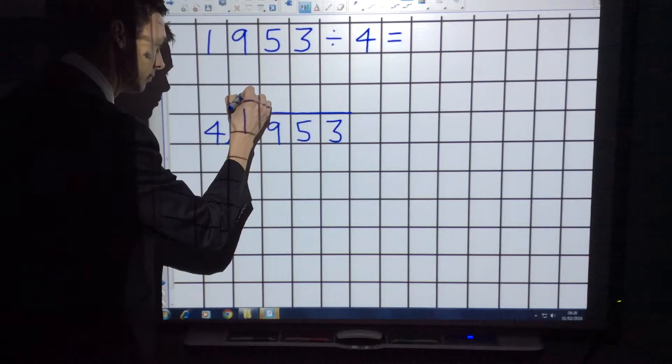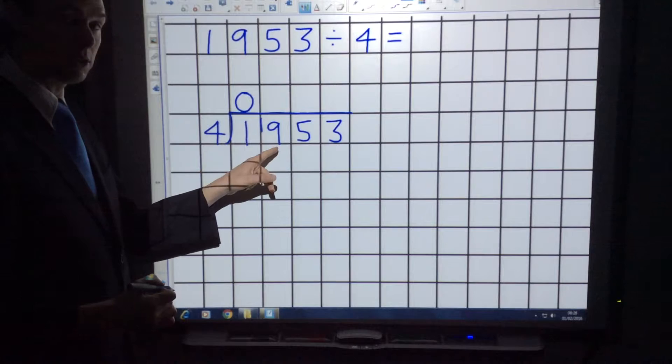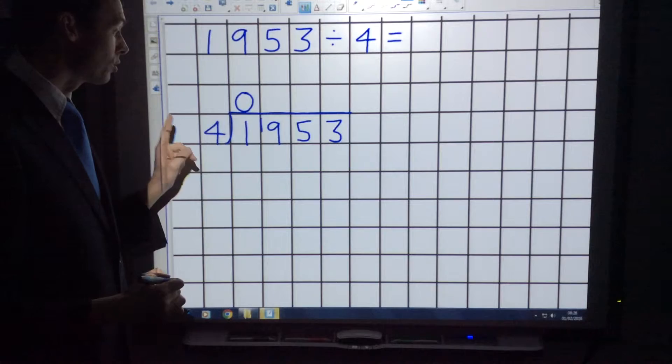Fours into one goes no times, but the remainder is one. So you carry the remainder over, and this number becomes nineteen.